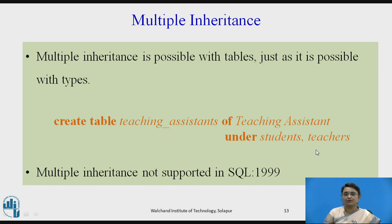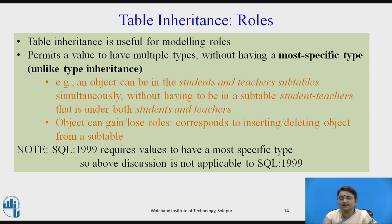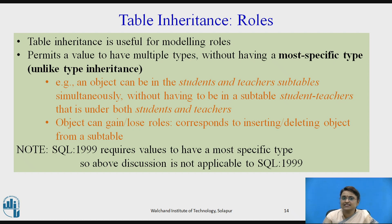Now talking about table inheritance — what are the roles and how does table inheritance take place? Table inheritance is useful for modeling roles. It permits a value to be of multiple types — the most specific type — like type inheritance, but without having to define a more specific type explicitly. For example, an object can be in both the students and teacher sub tables simultaneously, without having to be in the sub table of teaching assistants. An object can also gain or lose roles corresponding to inserting or deleting from sub tables.